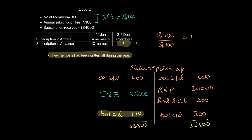That's how you can use the subscription account to calculate any missing figure. You can have the income and expenditure known, while the closing advance, closing arrears, or even the receipt and payment amount is missing — and using the subscription account, you can extract any of these values. Please take a close look at the subscription account, draw it yourself, and in future videos when we solve questions, you will see how the subscription account is applied.